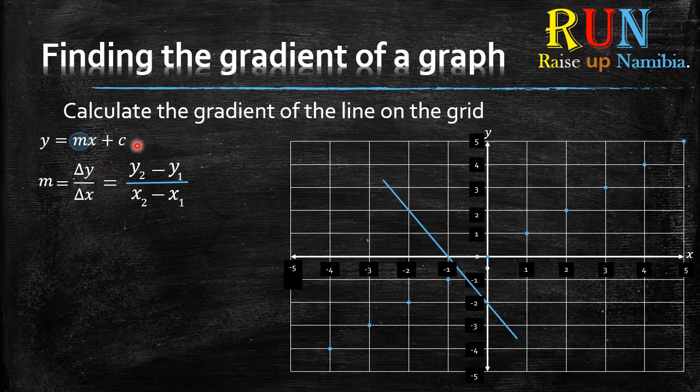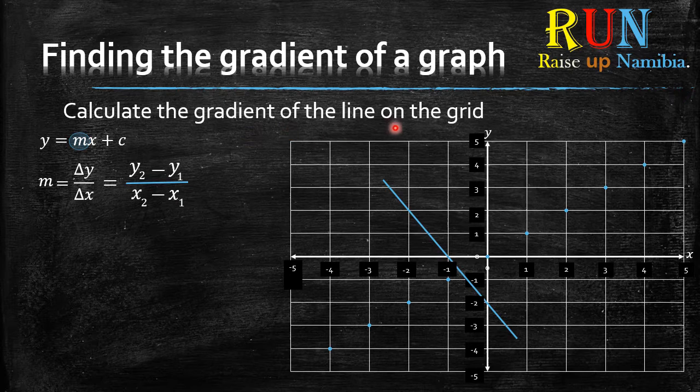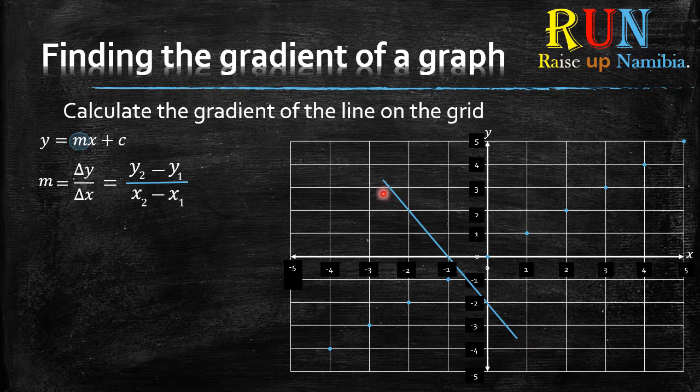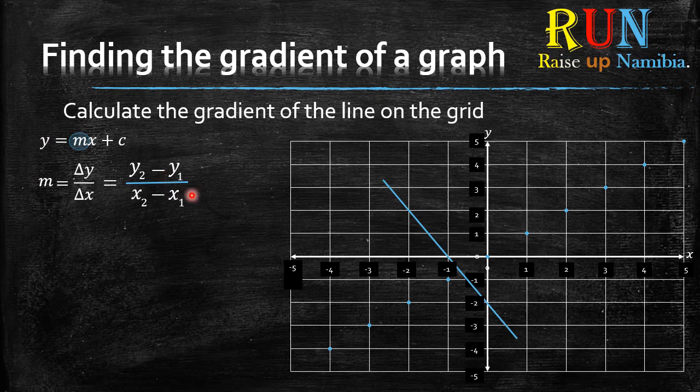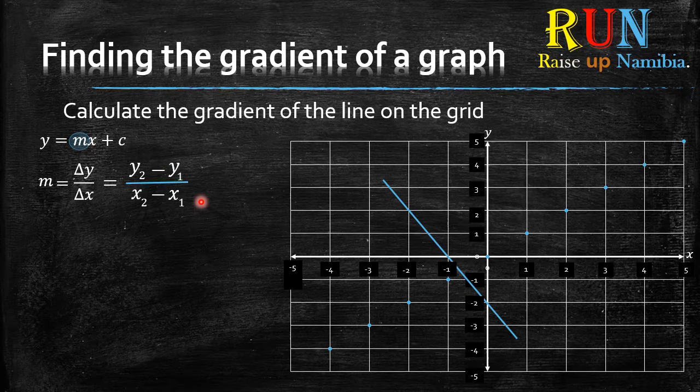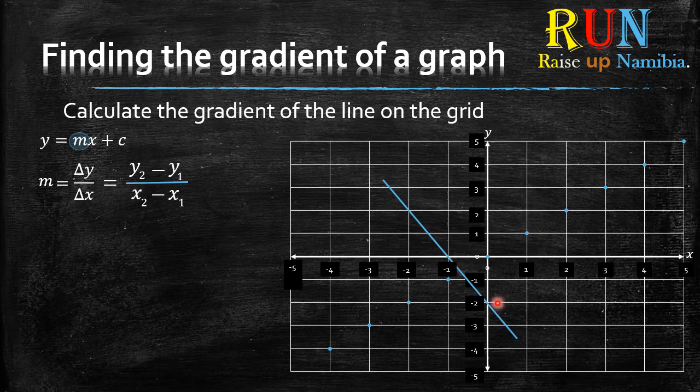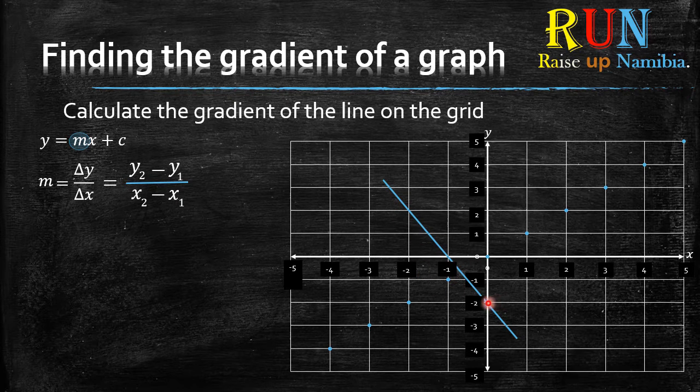Back to the lesson. Here we have calculate the gradient of the line on the grid. Now, we have this line on the grid. So how do we calculate the gradient? We use the same method or the same equations that we used in the previous examples. But the first thing is always to draw your triangle on this line.